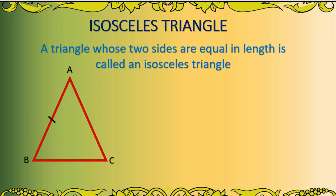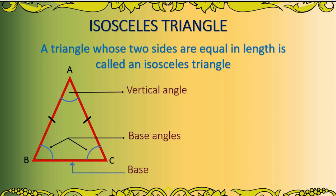In an isosceles triangle, the side other than the two equal sides is known as the base. Here, BC is the base. The two angles which include the base are called base angles, so angle B and angle C are base angles. The angle opposite to the base is called the vertical angle, so angle A is the vertical angle.